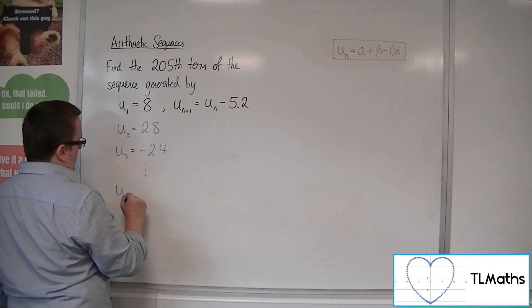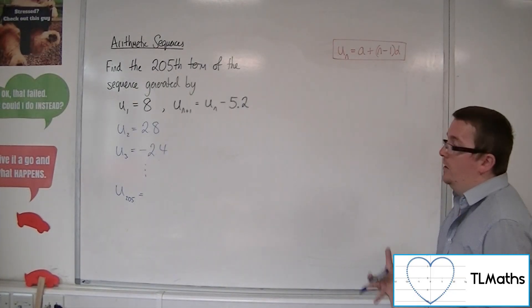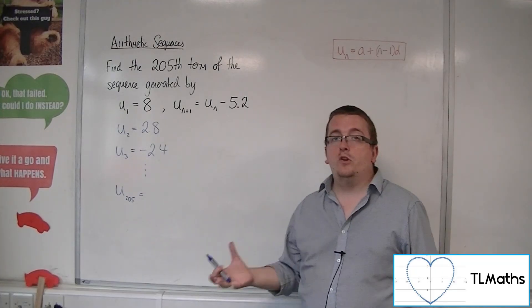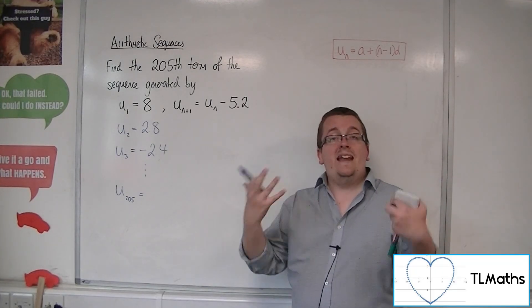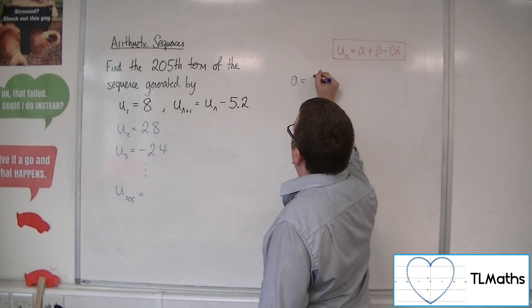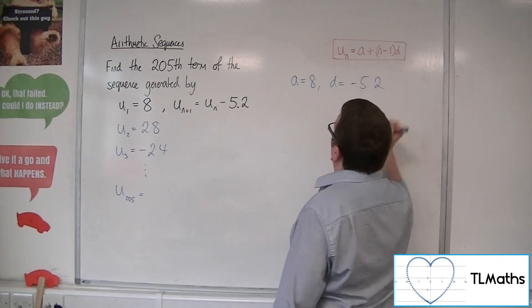I could go that way all the way up to the 205th term. But because I know that actually all I'm doing here is just subtracting 5.2 from each term, it's an arithmetic sequence. So the first term is 8, the common difference is minus 5.2.